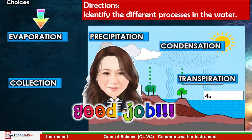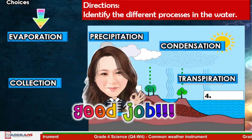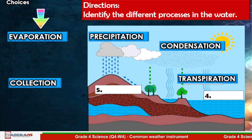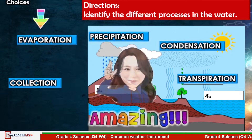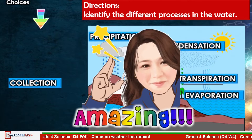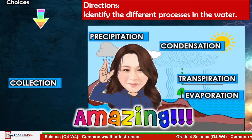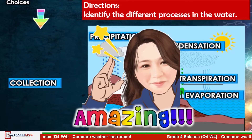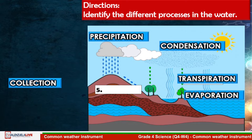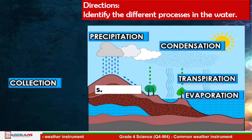Number four: It is a process by which water changes from liquid to gas or vapor. Amazing! The answer is Evaporation. For the last number: